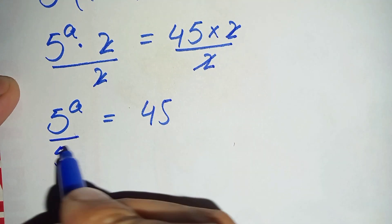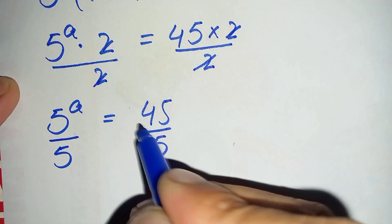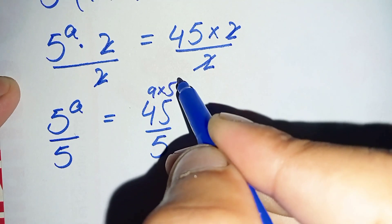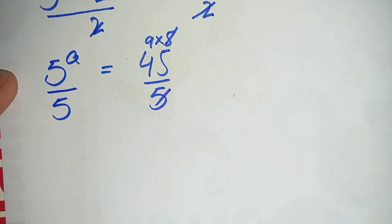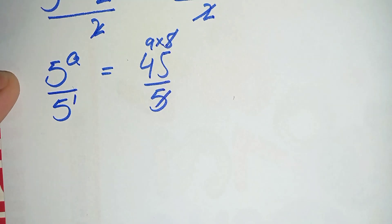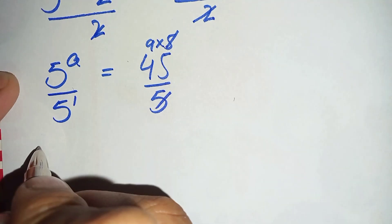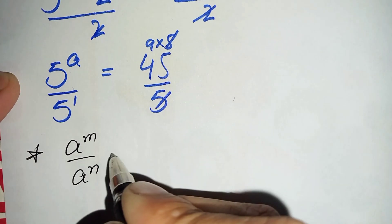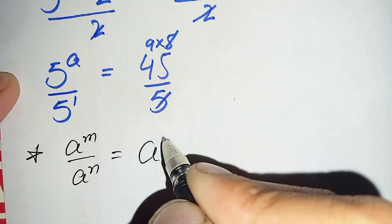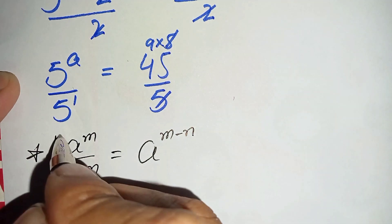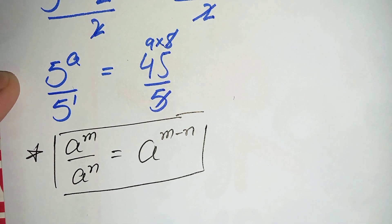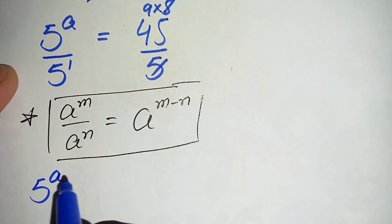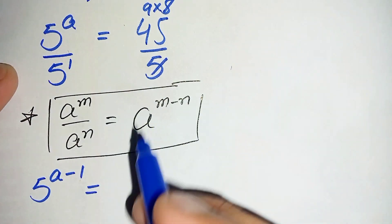In the next step we will divide both sides by 5. We can write 45 as 9 times 5, and cancel this 5 with the 5 on the left hand side. Using the exponential property — r raised to power m divided by r raised to power m equals r raised to power m minus m — the left hand side becomes 5 raised to power a minus 1 is equal to 9.